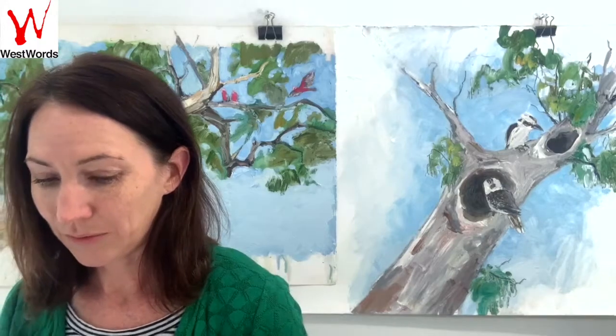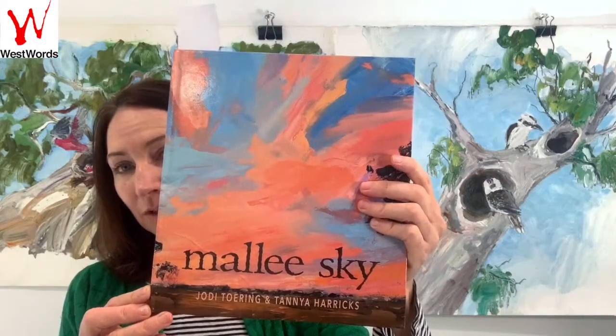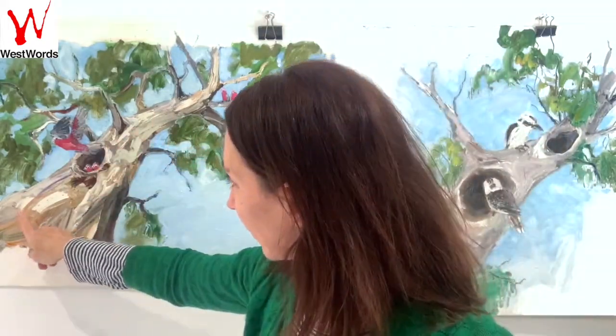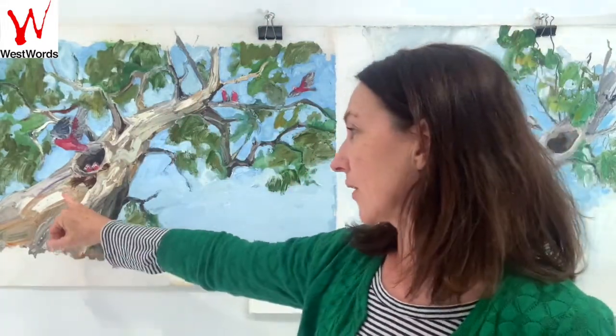Another book where I had a big tree is Mally Sky, written by Jodie Turing. And you can see behind me a tree from this book that I have painted. I've got all these sections of the gum tree in different colours. There are some yellows and purples here — let me find it in the book for a close look.